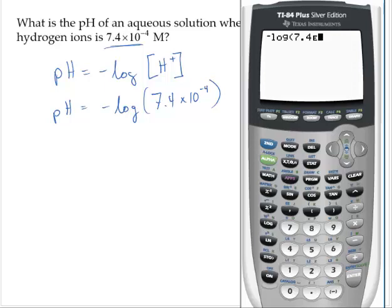So 7.4 times 10 to the negative fourth, I would type in 7.4 block e, negative 4. And hit Enter. And that's 3.13.